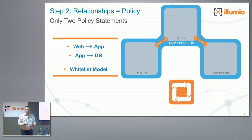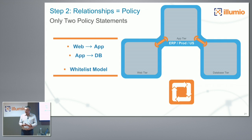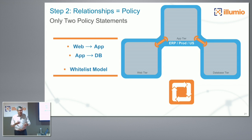Policy is really about a relationship. This is a whitelist model. In this case, there are really two policies we're writing: the web tier can talk to the app tier, and the app tier can talk to the database tier. At that point, there is no inter-web-tier traffic unless you specify it — in this use case, you don't.